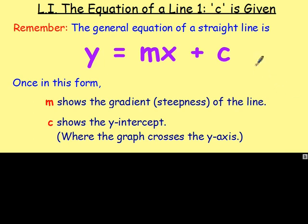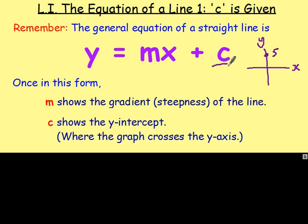Just remember, if you've got your x and your y-axis drawn in, and the graph crossed at, let's say, 5, then the value of c would be plus 5. If the graph crossed at negative 2, c would be negative 2.